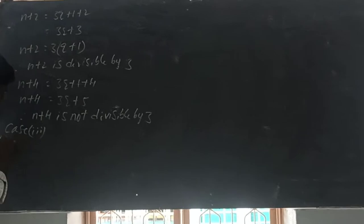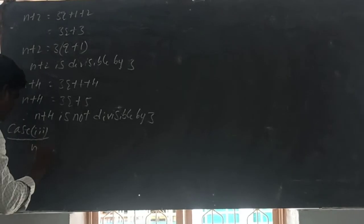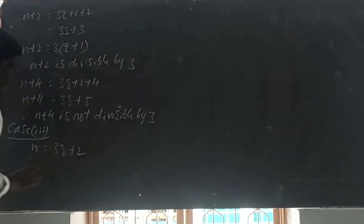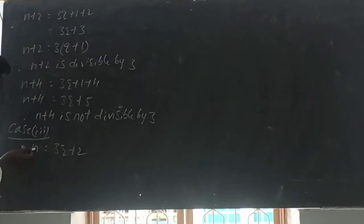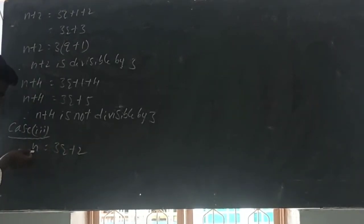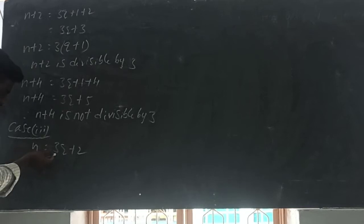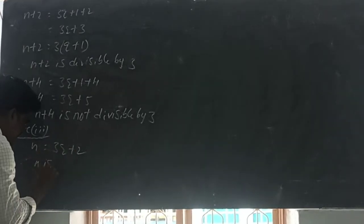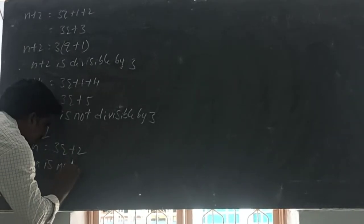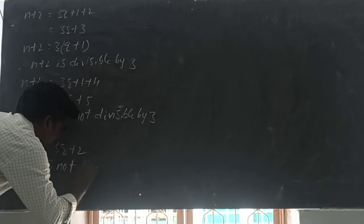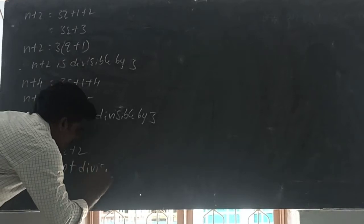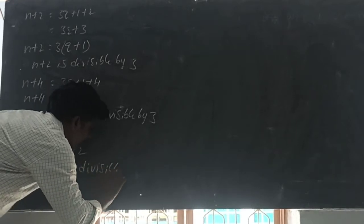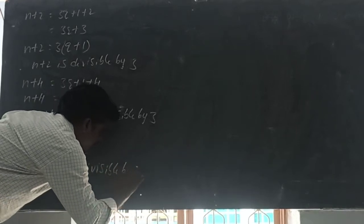Case 3: N is equal to 3Q plus 2. Here, when divided by 3 the remainder is 2. So therefore N is not divisible by 3.